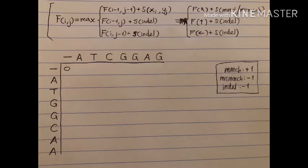This is how you initiate the table. You write dashes before each sequence and add a zero in the top left corner. Then the first row and the first column are the easiest to fill. For the first cell you basically only have one option — you can only go to the left, not diagonally or up.